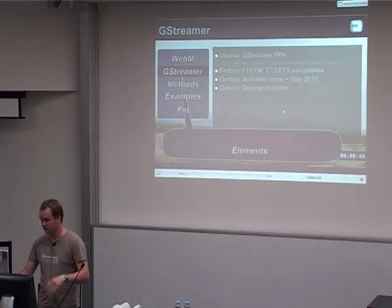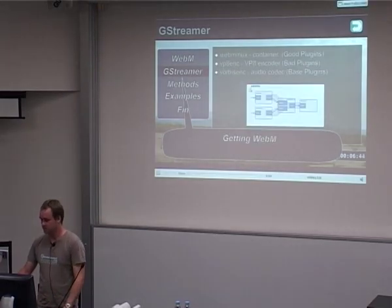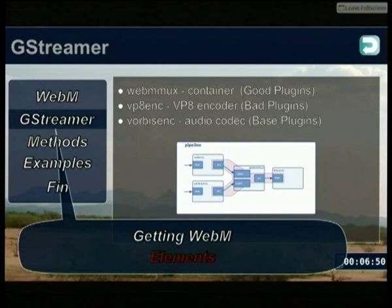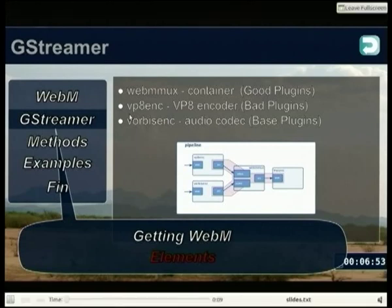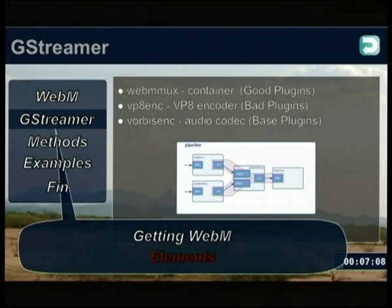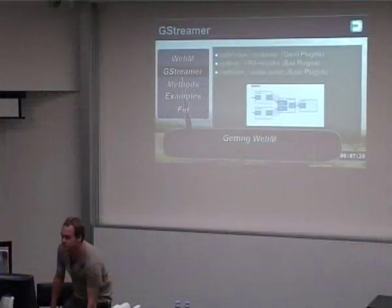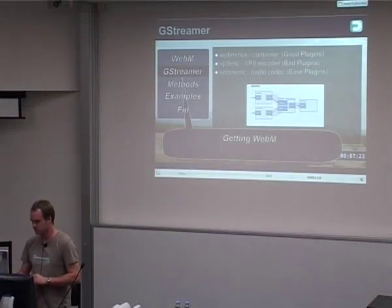If you get that and run upgrades on your GStreamer, you get a few new components installed in your GStreamer plugin stack. You'll probably already have Vorbis encode because it's in the base plugins on every distro that runs GNOME. But you will get the WebM MUX and VP8 encoder, and you'll get the VP8 decoder. This is mostly about producing content rather than playing it.